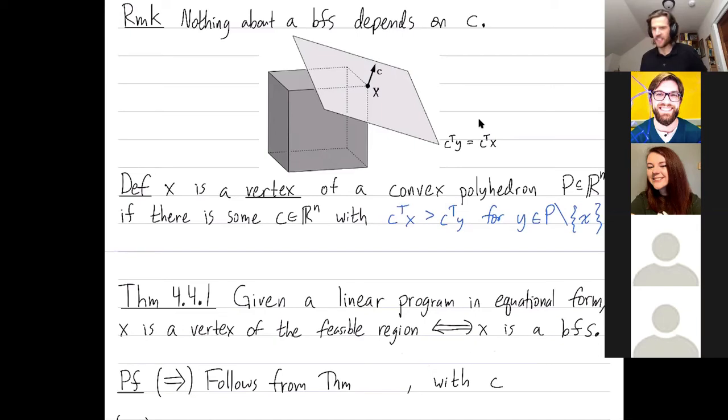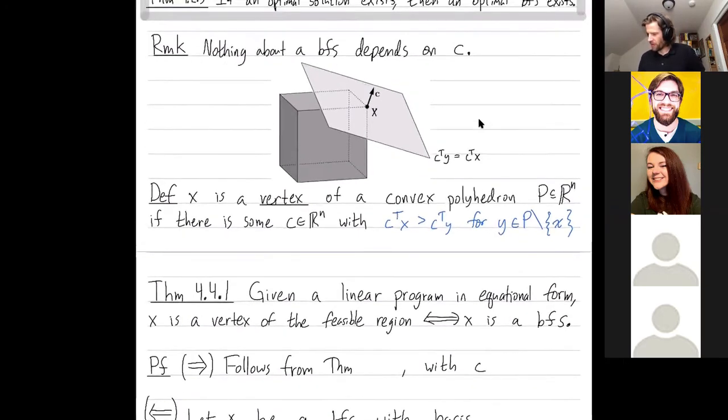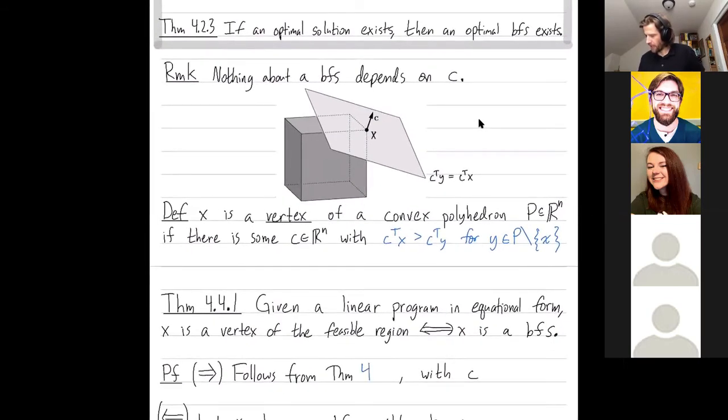So let's prove this theorem. We're going to prove both directions of this implication one at a time. So the first direction follows from theorem 4.2.3, which is right now at the top of my screen. Okay, so we're trying to show that if X is a vertex of my feasible region, pretend this is my feasible region for a linear program, then X is a basic feasible solution. So we're going to choose C to be the direction vector here, giving that X is a vertex.